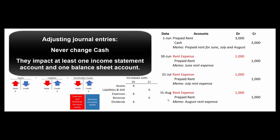A couple things of note: adjusting journal entries never affect cash and they always affect at least one income statement account and one balance sheet account.